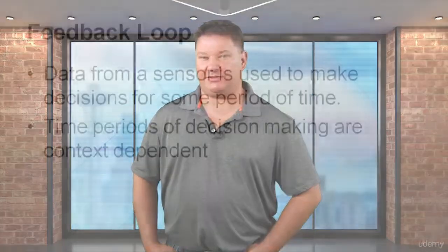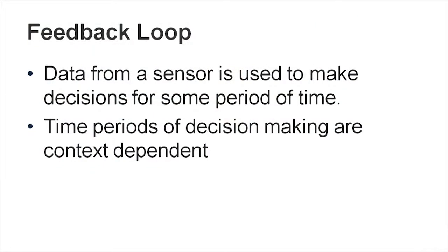A feedback loop: data from a sensor is used to make decisions for some period of time. Time periods of decision making are context dependent. You have a process running that's being monitored by something else — that's your sensor. It could be a computer watching a network, or a honeypot receiving data that something is watching. When something happens, you alarm or alert the SOC team — the Security Operations Center — which is the first team to handle any events. If you don't have a SOC, your information security team receives alerts from the appliances and responds accordingly. For the test: a feedback loop is data from a sensor used to make decisions for some period of time.